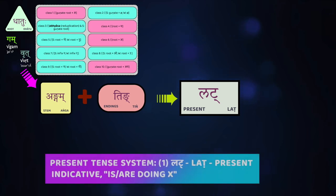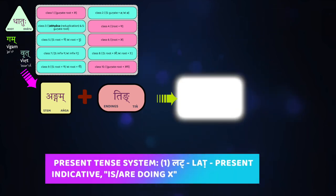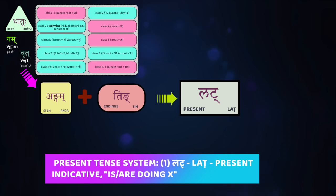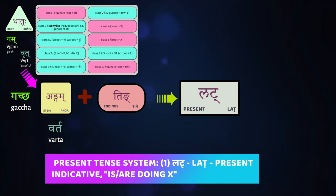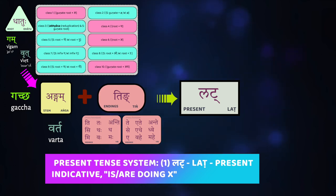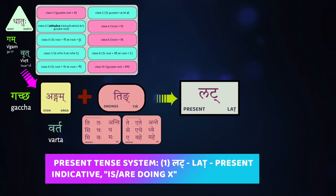The classes form what's called the present system — the lāt. To be precise, the lāt refers to when you create the present stem from the verb root, and then you add the regular endings onto them — the ones we've already learnt — these two different kinds of endings: the parasmaipada endings and the ātmanepada endings.